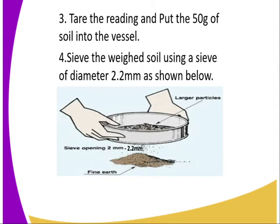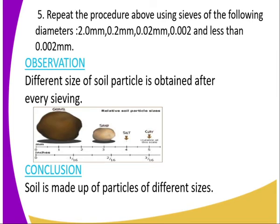Procedure number four: sieve the weighed soil using a sieve of diameter 2.2 mm, as shown in the diagram. Soil with big particles remains on the sieve while smaller particles are collected at the lower part. Repeat using sieves of different diameters: 2.0 mm, then 0.2 mm, followed by 0.02 mm, and finally 0.002 mm or less.